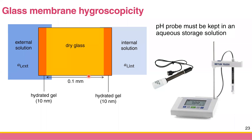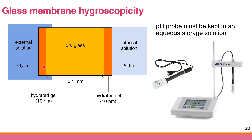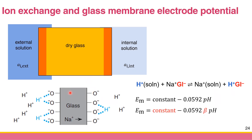In the hydrated gel, ion exchange occurs. Your glass contains sodium oxide and therefore has sodium ions. You can think of the glass as having a binding site. The ion exchange equilibrium works like this: a proton from your solution switches with a sodium ion from the glass, so at the end the glass binding site holds a proton from your sample or internal solution, and the sodium ion is released out.